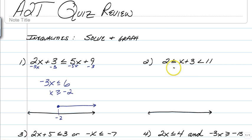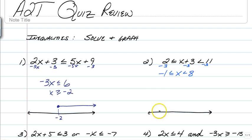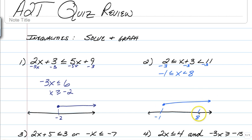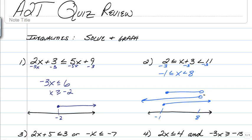The next one, we have an AND statement. We are going to subtract 3 from all three parts, giving us negative 1 is less than or equal to x, which is less than 8. So we have our negative 1 and our 8. That says x is greater than or equal to negative 1 — solid dot to the right. And x is less than 8 — open circle above the 8 to the left. AND is only where you have overlap, satisfying both constraints, so there you go with a little barbell over the middle.